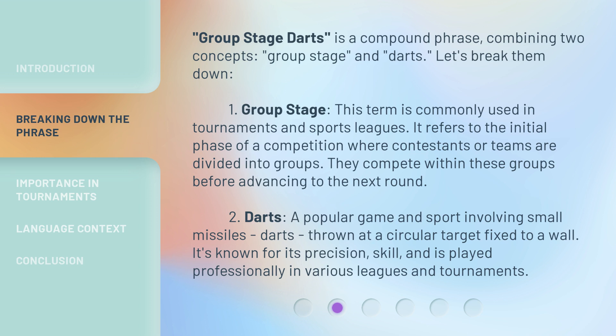One: group stage. This term is commonly used in tournaments and sports leagues. It refers to the initial phase of a competition where contestants or teams are divided into groups, and they compete within these groups before advancing to the next round. Two: darts — a popular game and sport involving small missiles thrown at a circular target fixed to a wall. It's known for its precision and skill, and is played professionally in various leagues and tournaments.